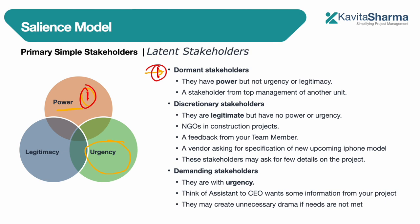The first latent type is dormant stakeholders. They have power but do not have urgency or legitimacy. Think about a roadways project — a government agency has power but may not currently use it; they could come, inspect, and stop the project. Similarly, a media organization covering roadways might not be reporting on your project yet. If the project is delayed beyond a certain time frame, that media organization may start reporting on it, acquiring additional dimensions.